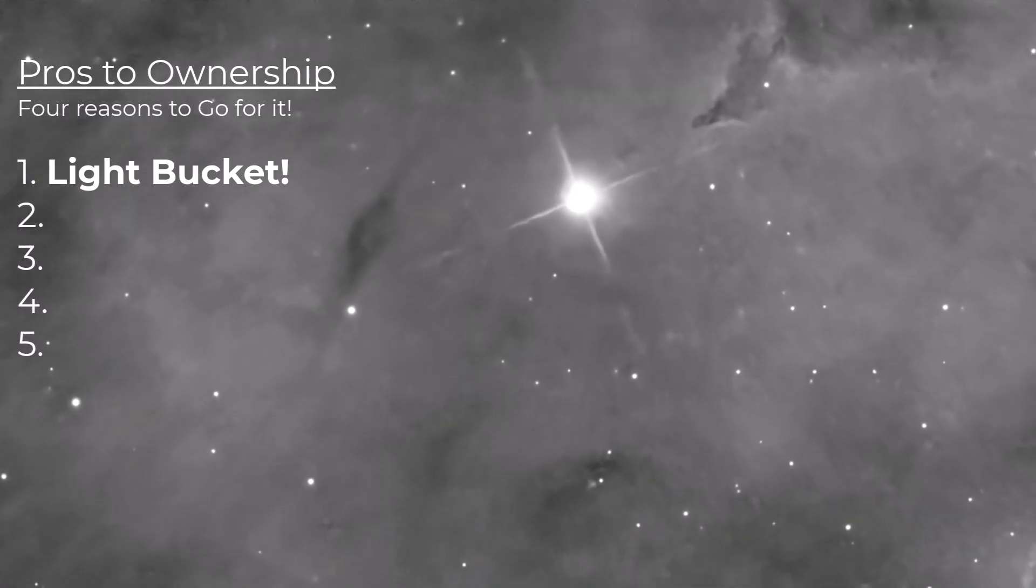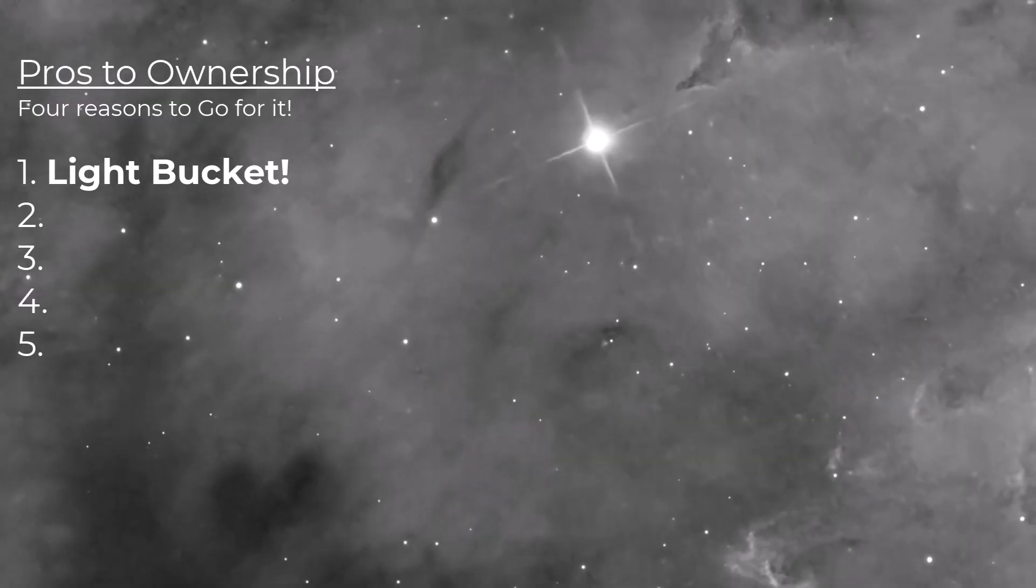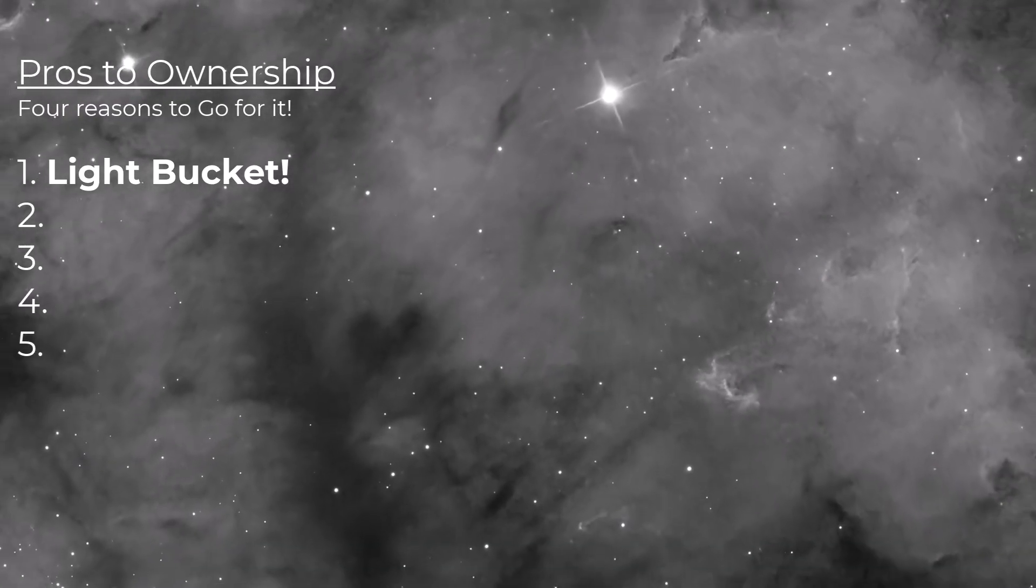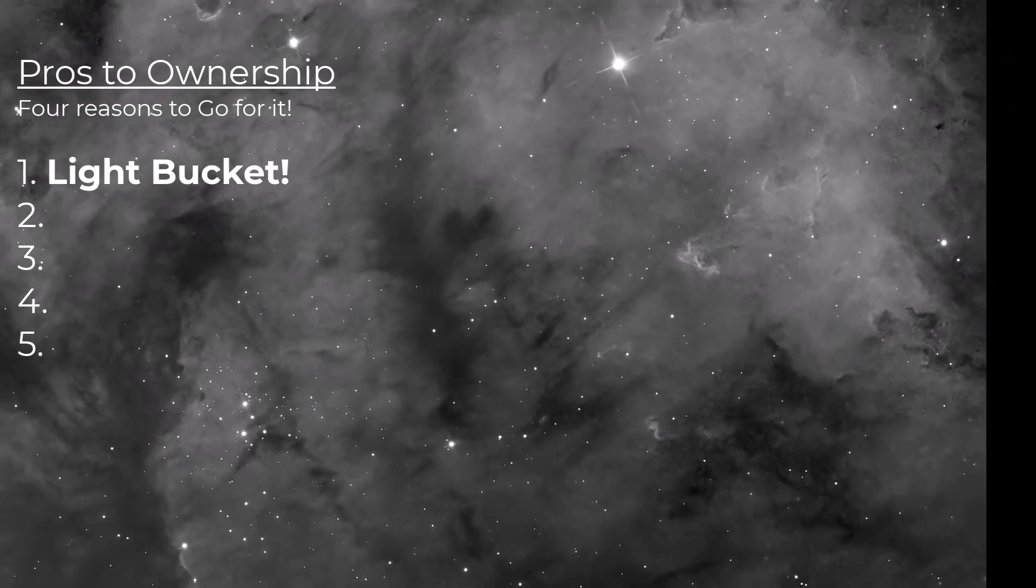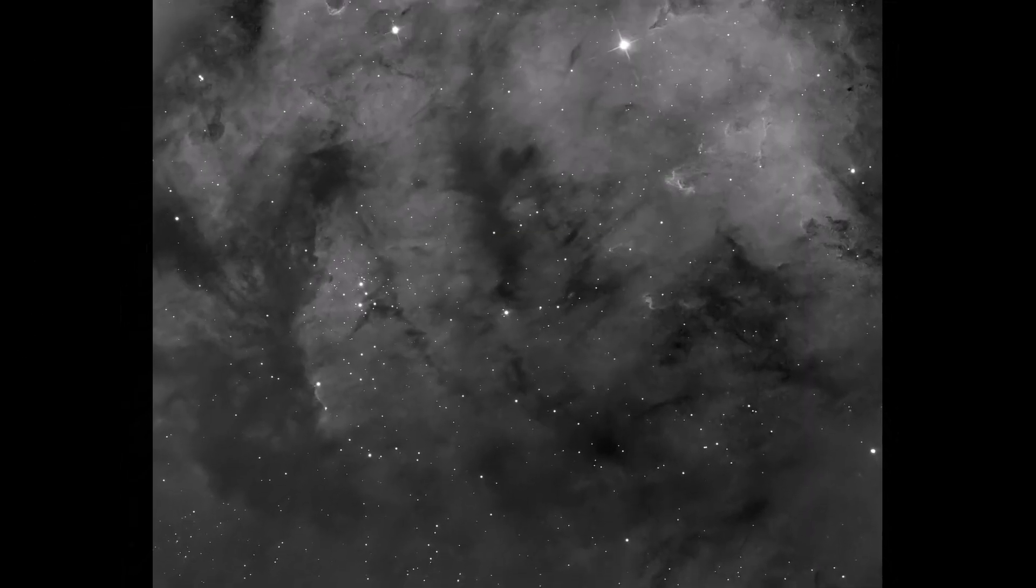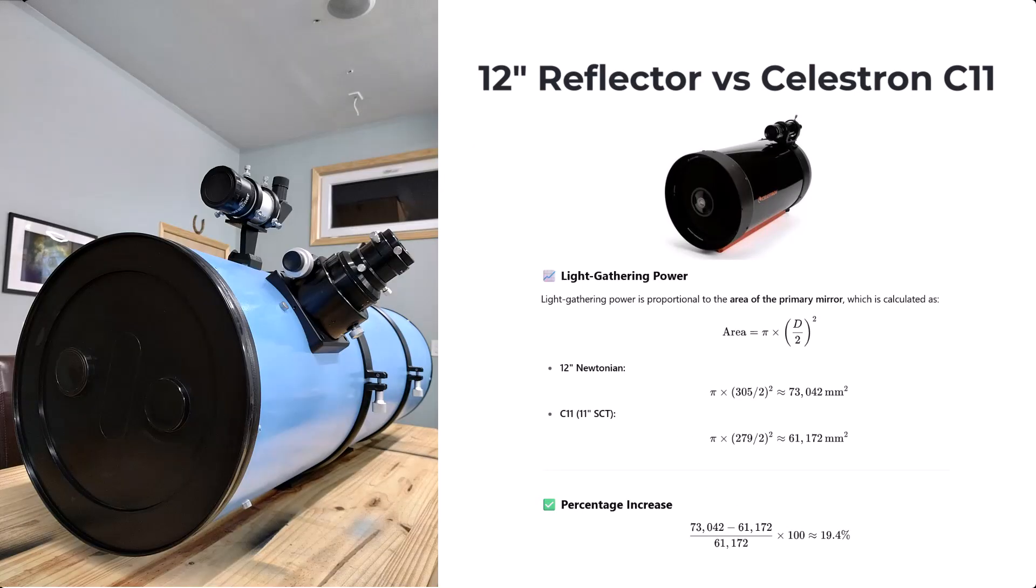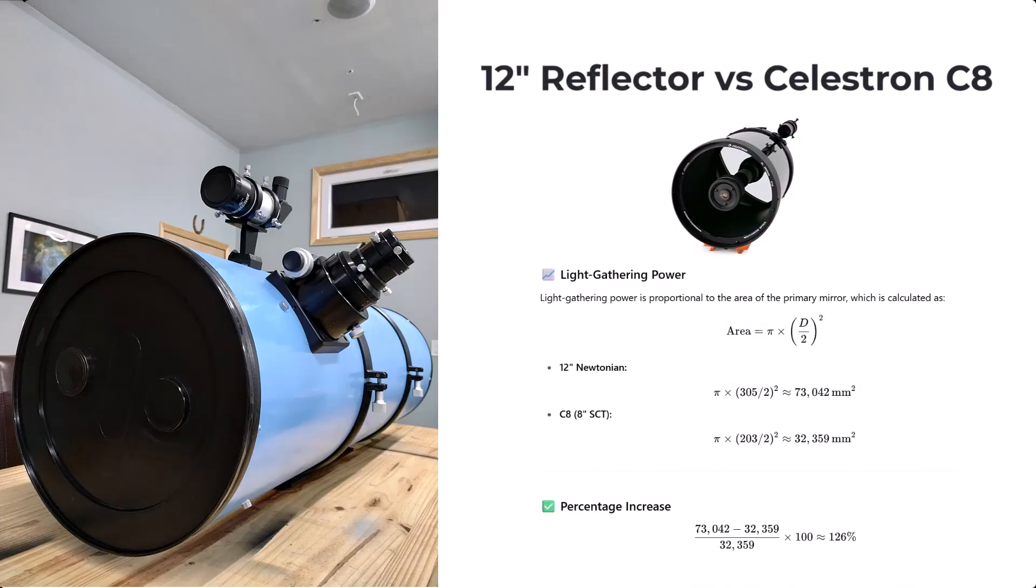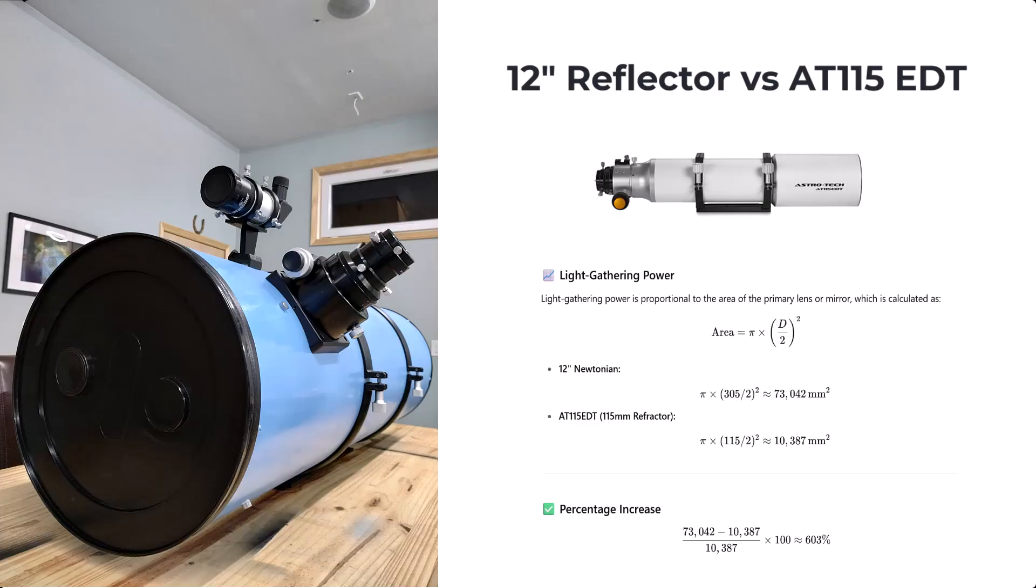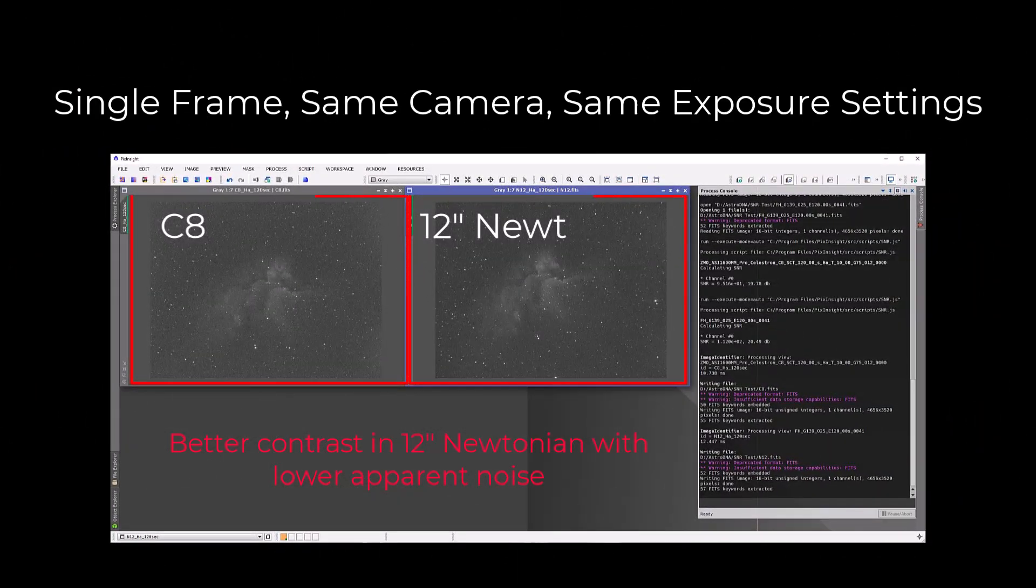And the first is that, my God, this is a serious light bucket. And aperture does matter in astronomy. Don't let anybody tell you differently. The 12-inch mirror, this is a 19% increase in the light-gathering surface when we compare it to my next largest telescope, which is the C-11. It gathers 125% more light than my C-8 and 600% more light than my AT-115 EDT refractor.